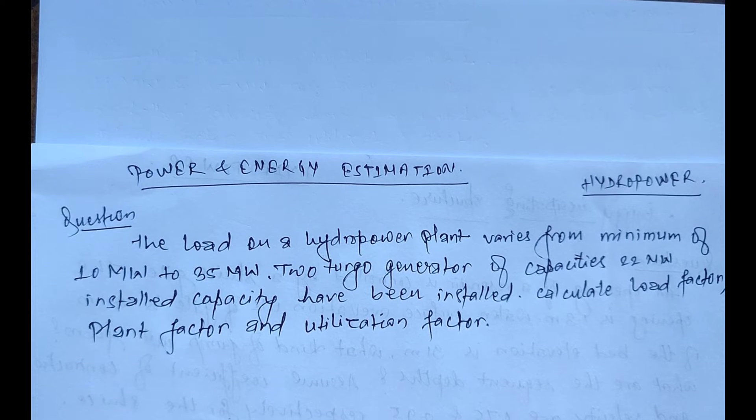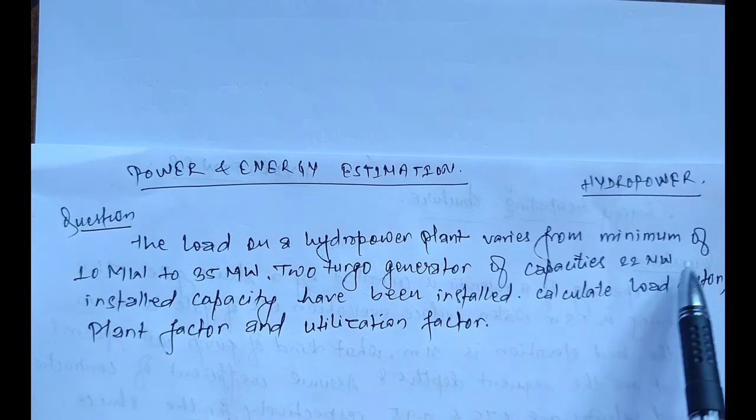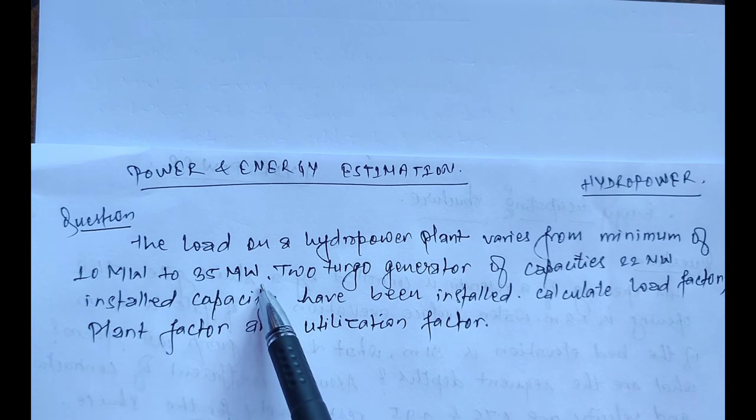Hello everyone, welcome to Hydropower. Today we will solve one numerical problem related to power and energy estimation. The given question is: the load on a hydropower plant varies from a minimum of 10 megawatts to 35 megawatts